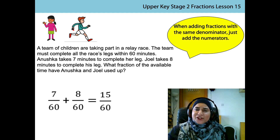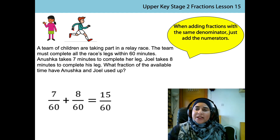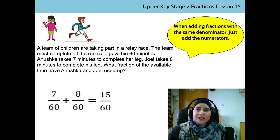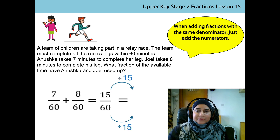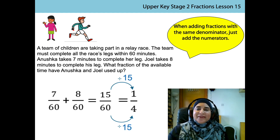What does that mean in this context? It means that Anushka and Joel have used up 15 of the 60 minutes available to their team. 60 minutes is one hour. Sometimes we have to simplify a fraction so that it makes more sense in its context. The numerator is a factor of the denominator, so if I divide both by 15, I get a unit fraction. It makes more sense to say that Anushka and Joel have taken one quarter of an hour to complete their legs of the relay race.